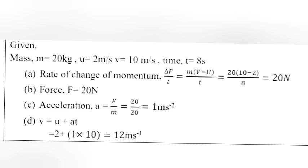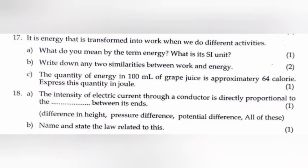Answer A: M into V minus U by T equal 20 into 10 minus 2 by 8 equal 20 N. B: Force F is equal to 20 N. C: Acceleration A is equal to F by M equal 20 by 20 equal 1 m s raise to minus 2. D: V is equal to U plus AT equal 2 plus 1 into 10 equal 12 m s inverse.